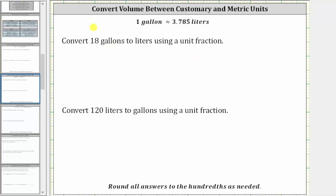The first step is to write 18 gallons as a fraction with the denominator of one. And now we multiply by a unit fraction to convert 18 gallons to liters. To form the unit fraction, we use the conversion: one gallon is approximately 3.785 liters.